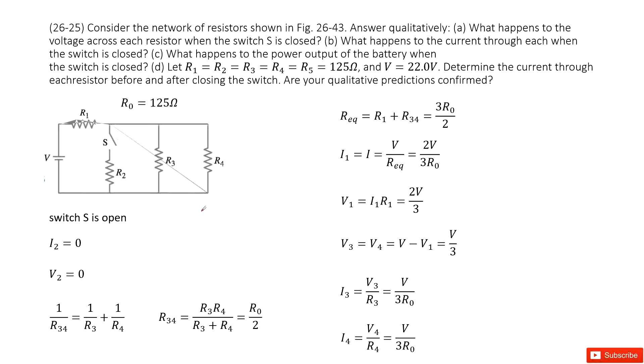Chapter 26 is about DC circuits. We can see we have this circuit. We need to compare the voltage changes for each resistor and the current changes for each resistor when the switch is closed or opened. How can we do that? We need to solve this circuit initially. We know R1, R2, R3, R4 are identical resistors. Their resistance is R0, which is 125 ohms, and the power supply offers 22 volts.